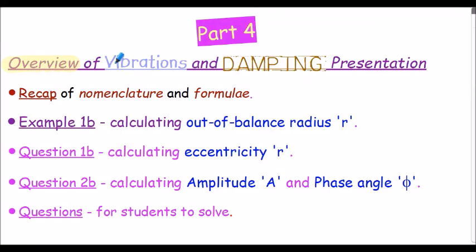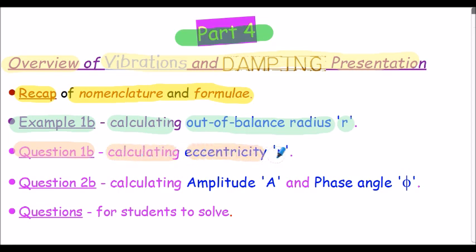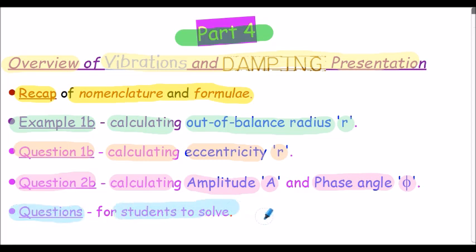Here's an overview of the vibrations and damping presentation, part 4. The presentation commences with a brief recap of the nomenclature and formulae used throughout the lecture series. Example 1b is a full solution in which we have to calculate the out-of-balance radius r for our rotating mass. Question 1b is very similar to example 1b, essentially different numerical values, where again we have to calculate the eccentricity of the radius r. Question 2b, we have to calculate the amplitude A and the phase angle phi for a particular problem. And we conclude with some questions for the students to attempt at their own pace. These questions are slightly more complicated in the way they are presented, but the overall solutions are very similar to that of our part 3 previous presentation.